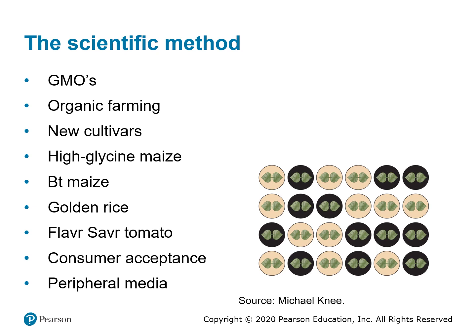These changes to address the issues will only come from proper scientific studies using the scientific method, and this has resulted in many innovations, including genetically modified organisms (GMOs), organic farming improvements, new cultivars, high-lysine maize, Bt maize including sweet corn, golden rice, and Flavr Savr tomato. While some of these have resolved world food security issues, some have fallen foul of the consumer and no longer exist due to consumer pressure. It's important that consumer acceptance should be based on the science and not the peripheral media — and that is the duty of horticulturalists to ensure that actually happens.